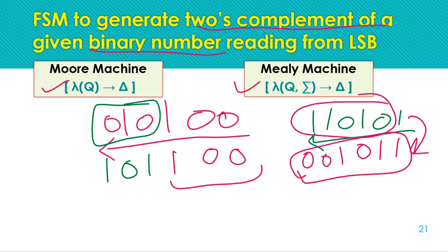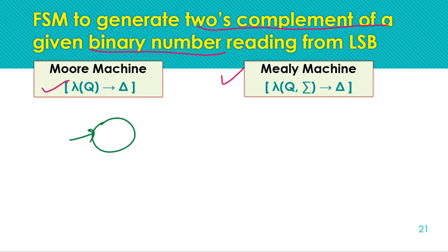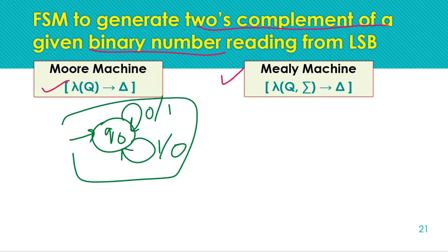For Mealy and Moore machines, since we cannot perform computation, we use this shortcut method to generate the two's complement. For the Mealy machine, we will reuse the one's complement machine from the last lecture. In that machine, from state Q0, for input zero we generate one, and for input one we generate zero.